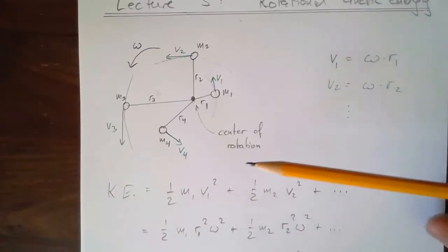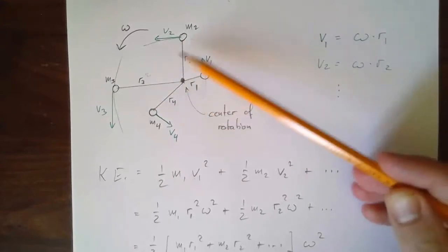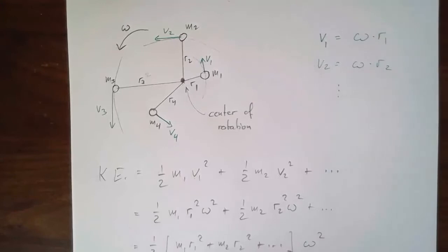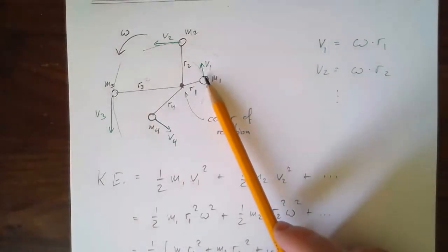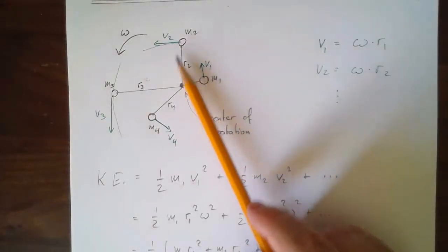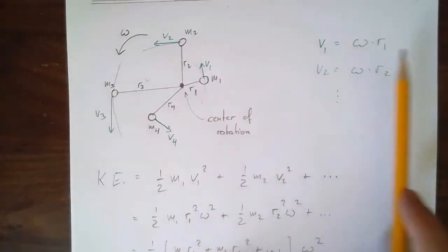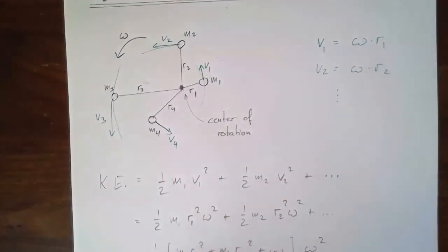What about a situation where the system as a whole is not only rotating but also moving sideways? A rolling ball might be a good example. How can I deal with the energy then? The motion of any chunk would be made up of the overall translational motion plus the rotational motion.